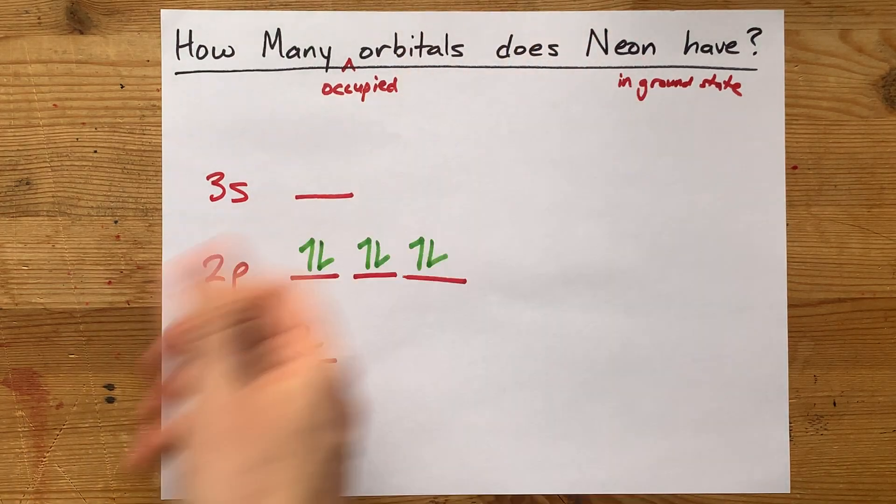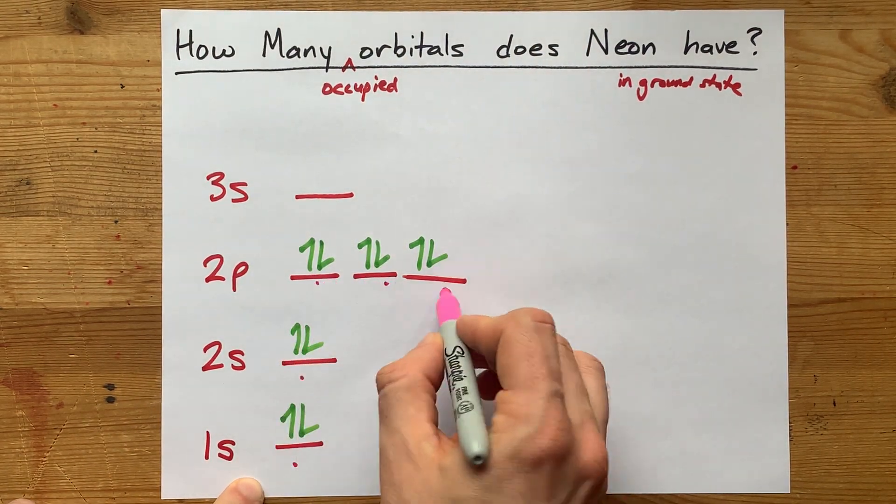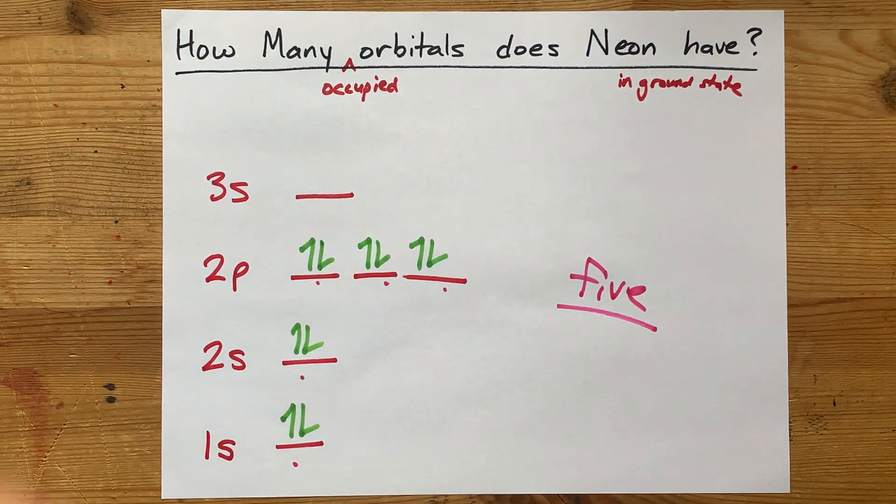Okay, so the answer to how many of the orbitals are occupied is 1, 2, 3, 4, 5. There are 5 occupied orbitals for neon. The end.